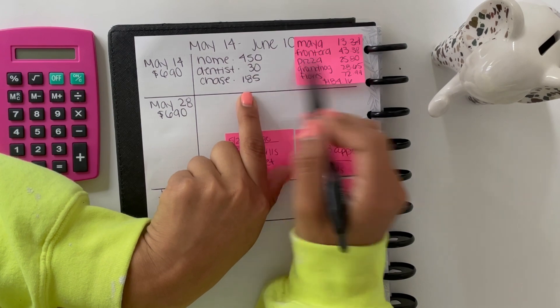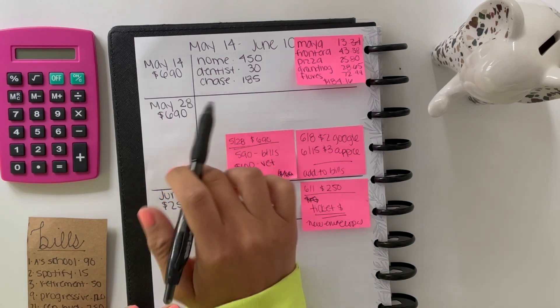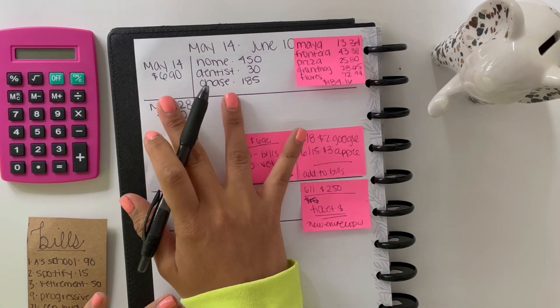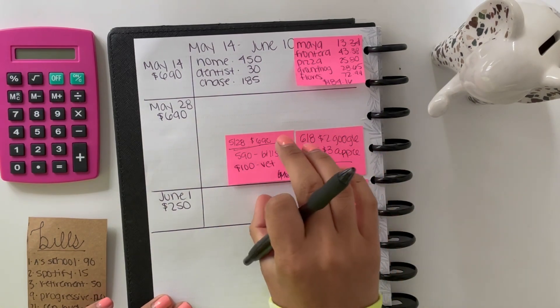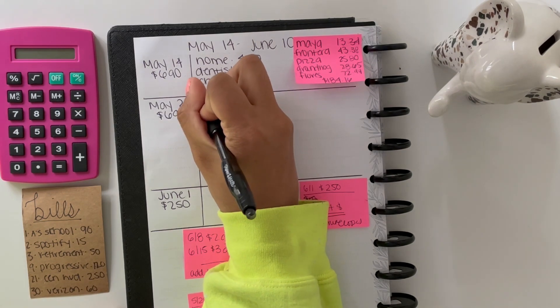For May 28th, this second child support payment, I use it to pay all my bills. So my bills equal $590 a month.